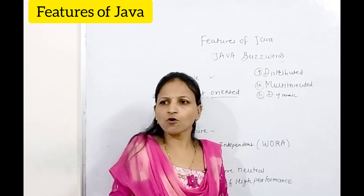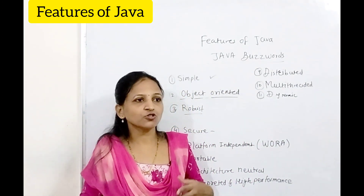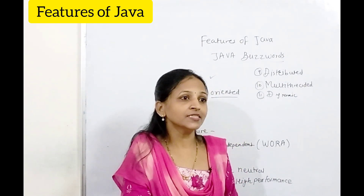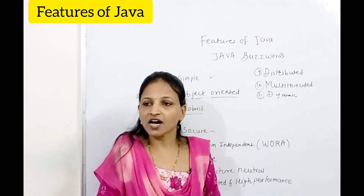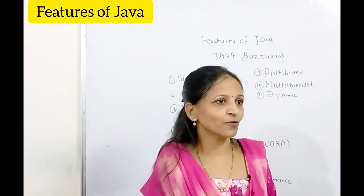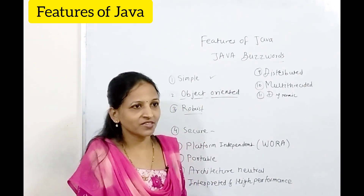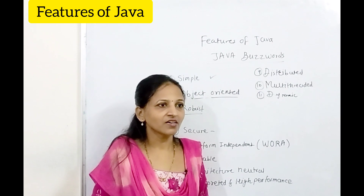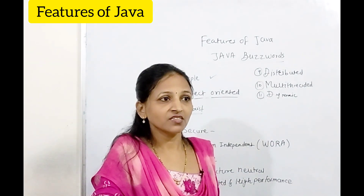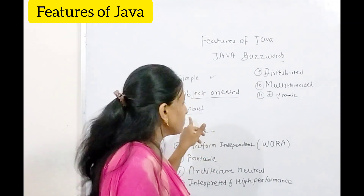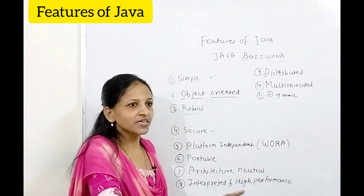In C or C++, if you create variables dynamically at runtime — in C using malloc or alloc functions, in C++ using the new operator — you allocate space dynamically and create objects dynamically, but you must free those objects explicitly using the delete operator in C++. Otherwise, after execution of the program, that memory will not get freed. But in Java there is automatic garbage collection, so whatever objects are not needed or not in use are automatically freed and destroyed.